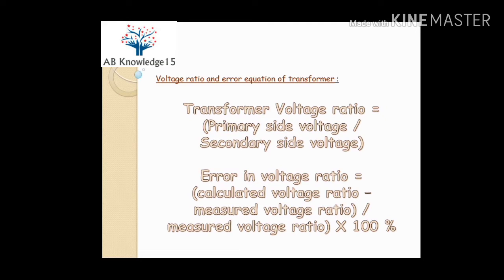Now coming to the voltage ratio and error equation of transformer. The transformer voltage ratio equation is simple: primary side voltage divided by secondary side voltage. The error equation for the voltage ratio test is: calculated voltage ratio minus measured voltage ratio, divided by measured voltage ratio, into 100% for calculating it into percentage form.